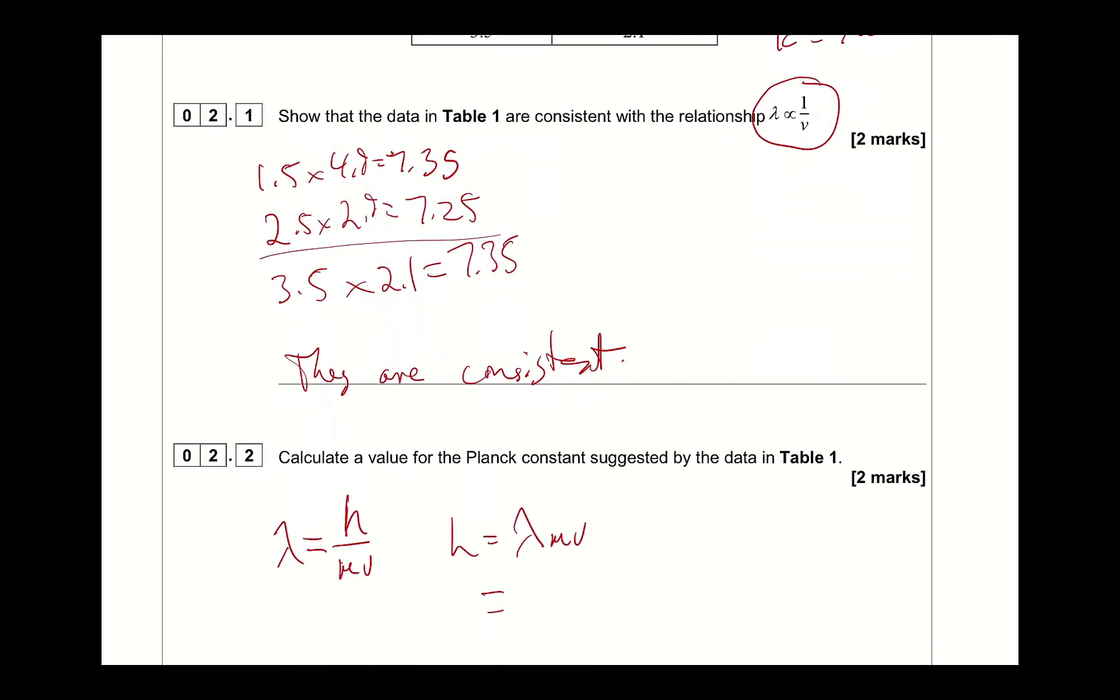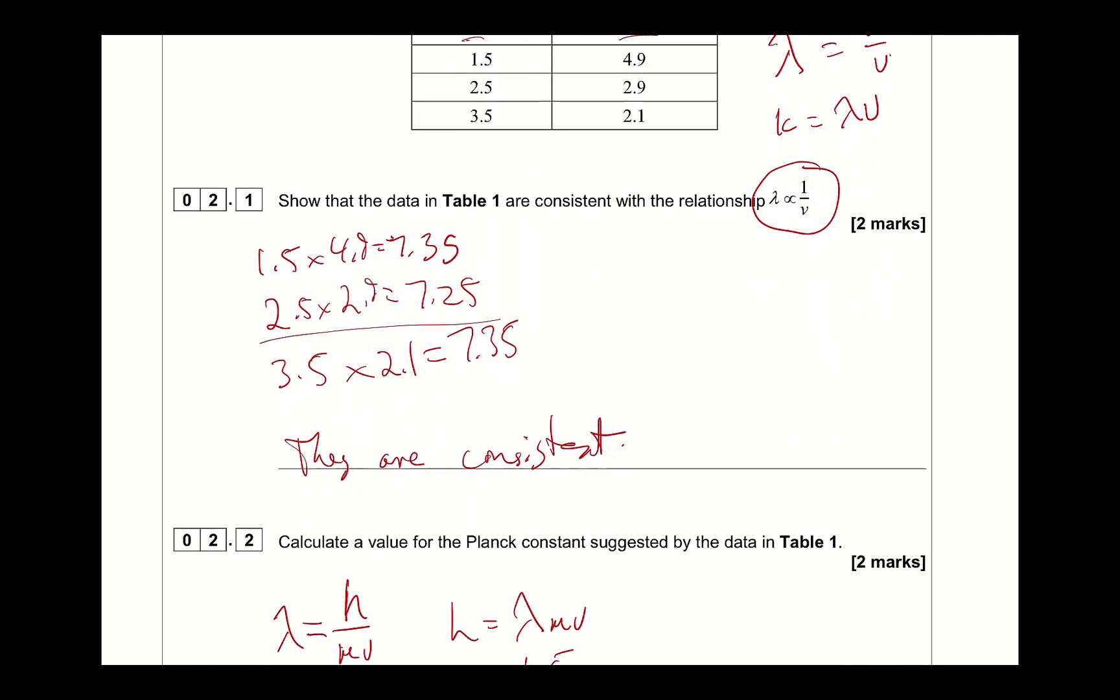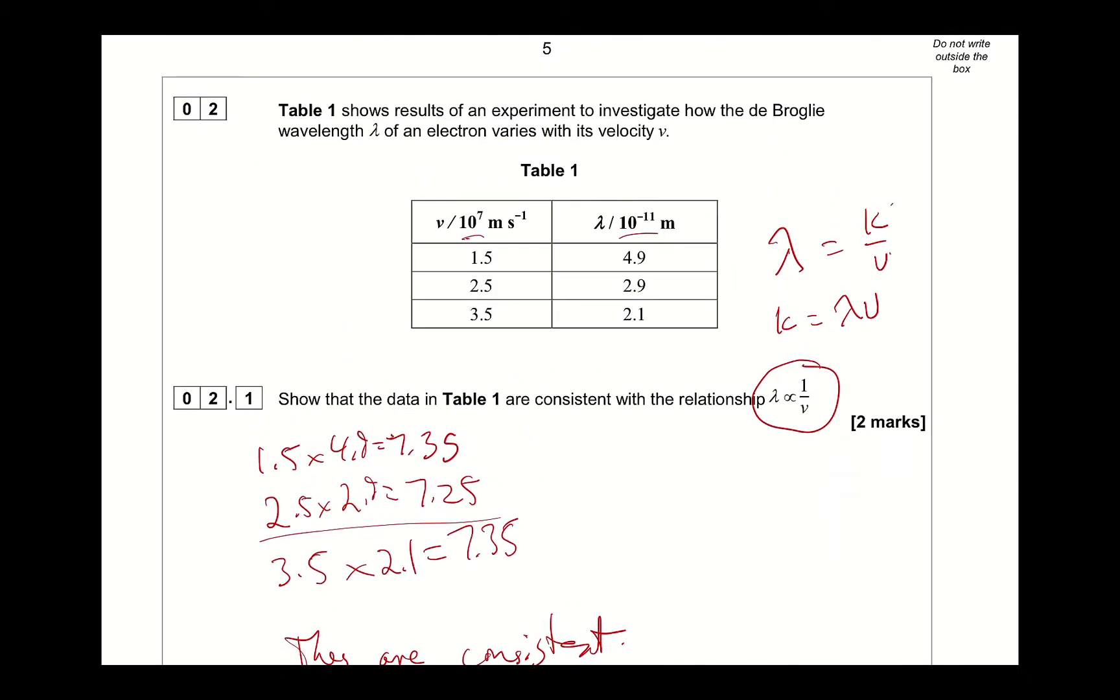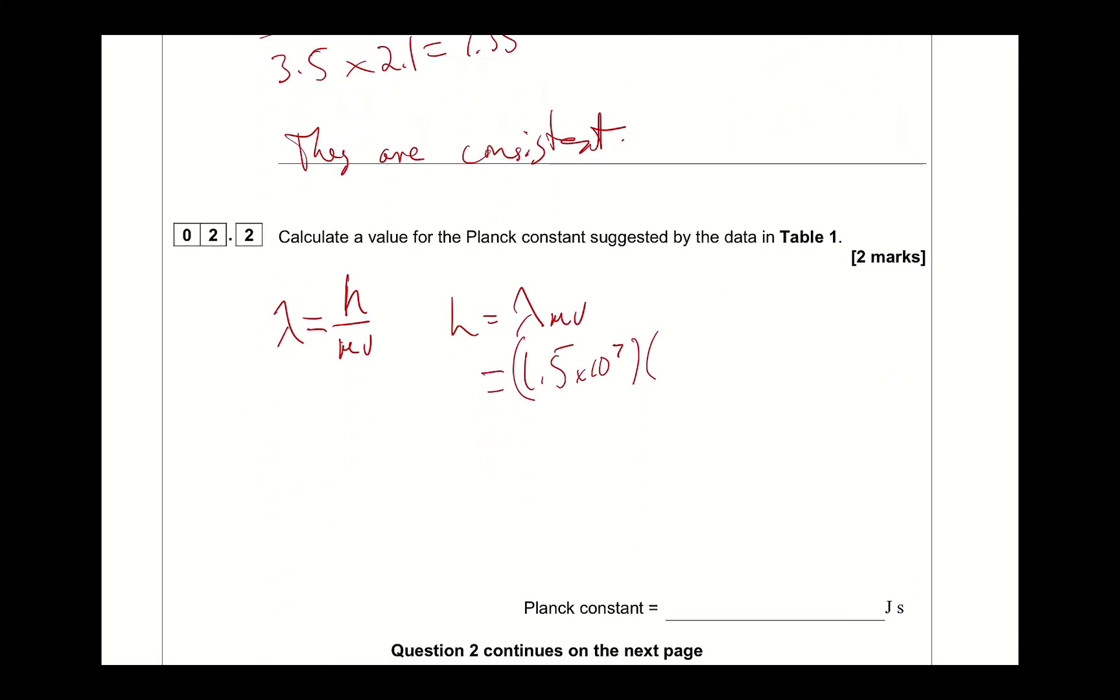So I'm going to use my first one here, 1.5 times 10 to the 7, that's my v, times 4.9 times 10 to the minus 11, that's my lambda. And the mass is the mass of an electron, 9.11 times 10 to the minus 31.